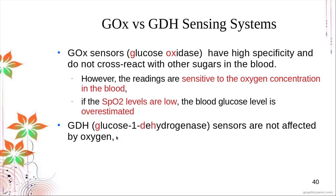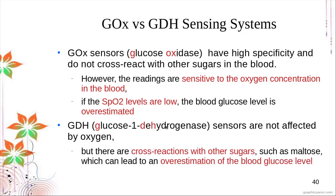The other system is GDH, glucose dehydrogenase. GDH is not affected by oxygen concentration at all. However, GDH is not very specific to glucose. In your blood, glucose is not the only sugar — you also have maltose and lactose. GDH can also react with maltose, so if you have high maltose concentration, the GDH system will detect maltose and read it as glucose, tending to overestimate blood glucose levels.